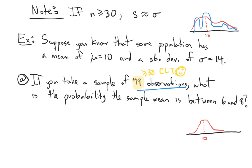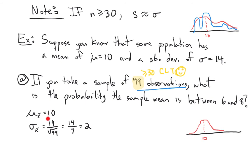So by the central limit theorem, we know that the mean is going to be 10, and the standard deviation is going to be 14 over root n — root 49. That's 14 over 7, which equals 2. So we know that this sampling distribution is a normal distribution with a mean of 10 and a standard deviation of 2.